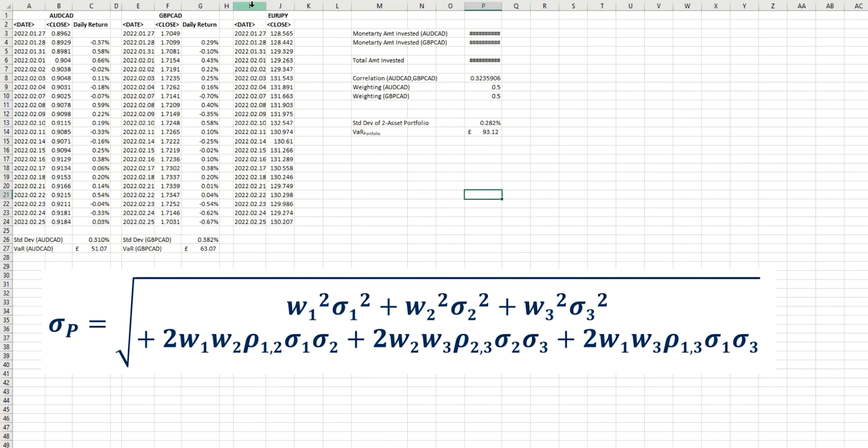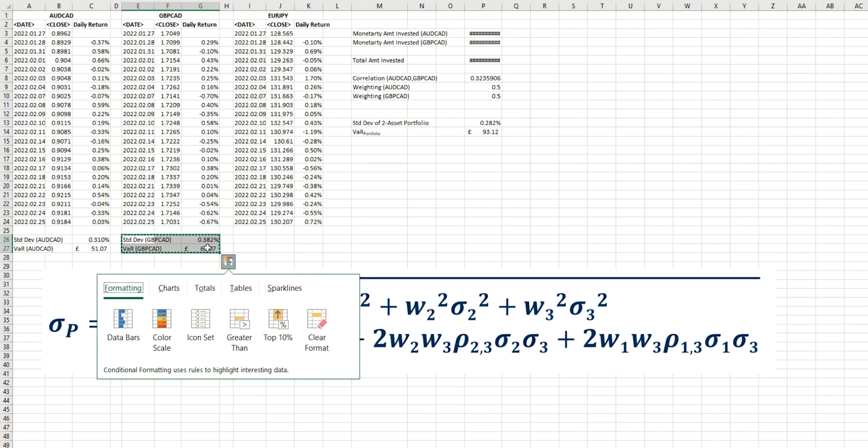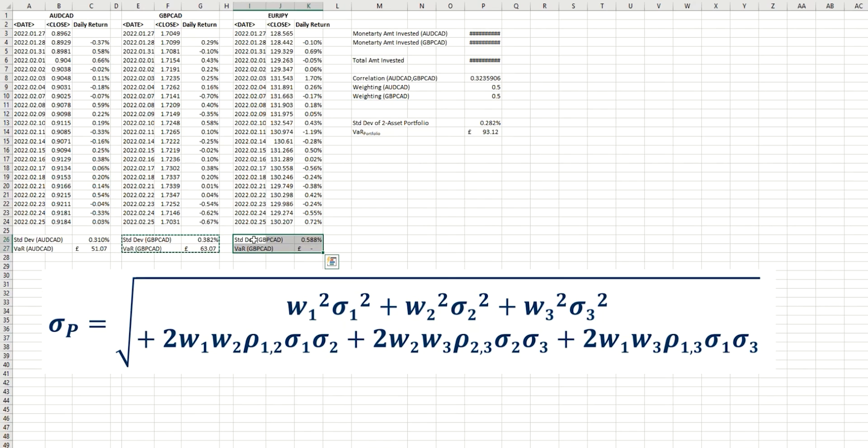But before we get into this calculation here, and I'll just delete this one, I've added the data here for an additional position, which in this case is Euro Yen. So what I then need to do is to calculate the daily returns for this asset. So I'm just going to copy that straight from the Pound CAD example. And as you can see, that's brought those calculations across, which is just the current close divided by the previous close minus one. And I'm going to do exactly the same for the individual standard deviation of returns and the individual value at risk for this one position on its own.